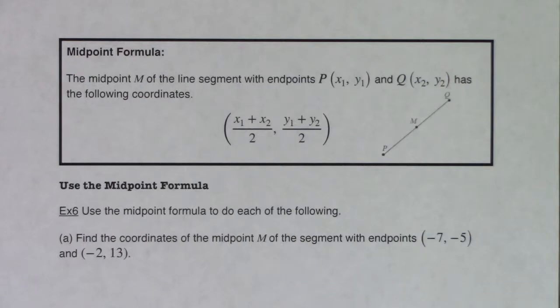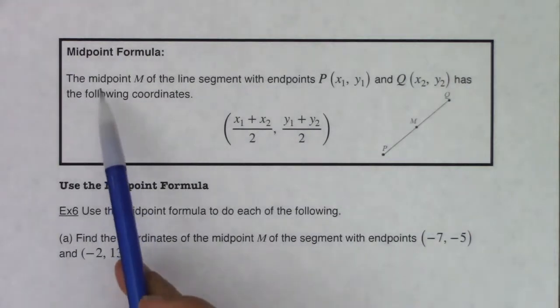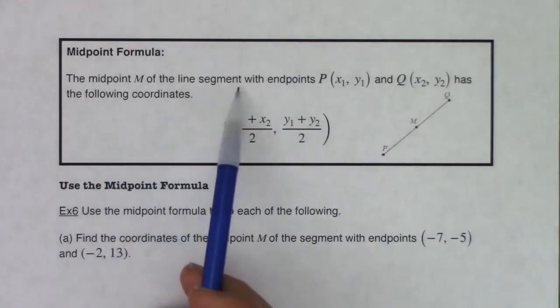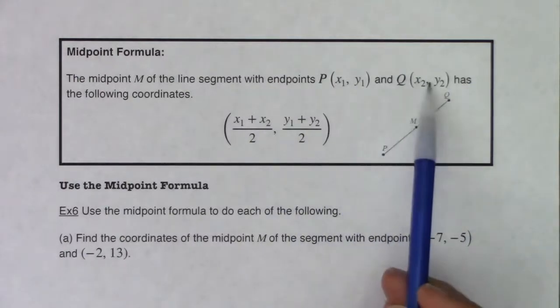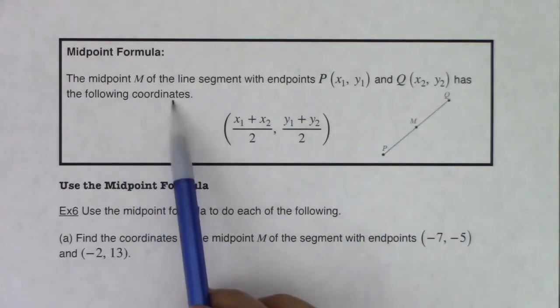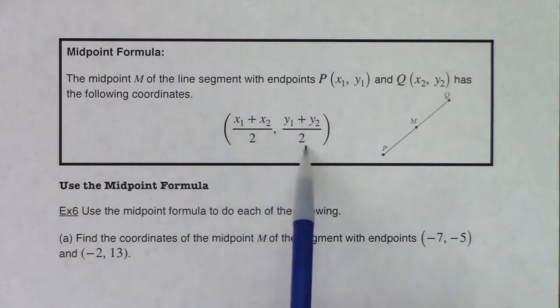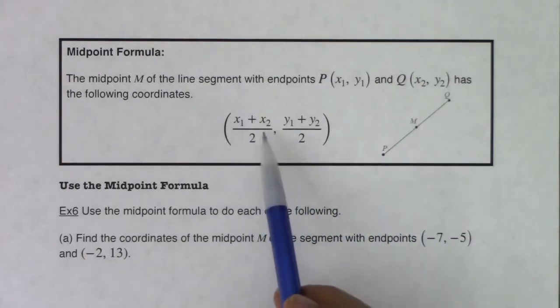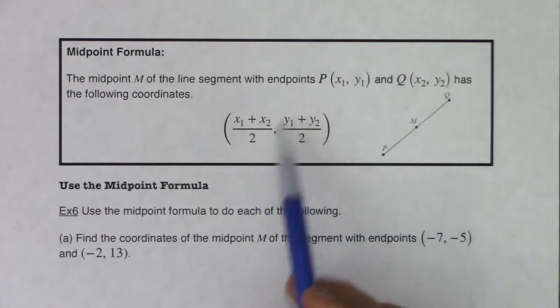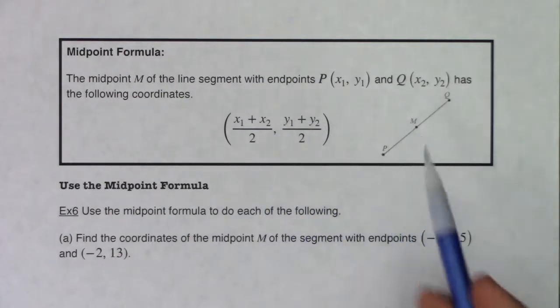Okay, Math 31, let's take a look at the midpoint formula. So the midpoint M of the line segment with endpoints P and Q has the following coordinates: x sub 1 plus x sub 2 over 2, y sub 1 plus y sub 2 over 2. So basically we're going to average out the x-coordinates, and we're going to take the average of the y-coordinates, and that's going to be our midpoint.